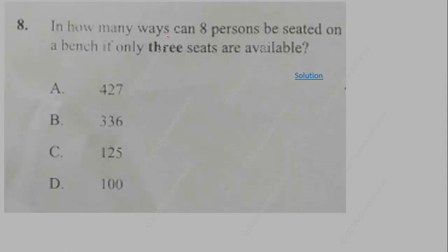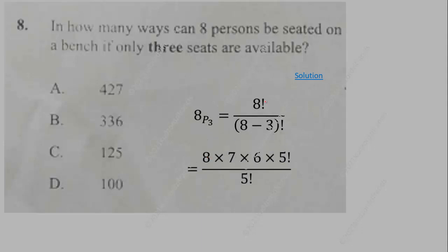Question 8: in how many ways can 8 persons be seated on a bench if only 3 seats are available? We use permutation: 8P3 = 8! / (8 − 3)! = 8 × 7 × 6 = 336 ways. Permutation is used because the positions on the bench are distinct.